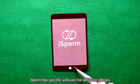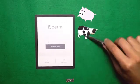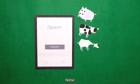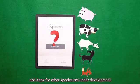iSperm has specific software for different species, such as pig, bull, goat, horse, and poultry. And apps for other species are under development.